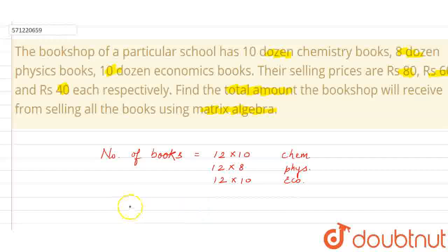Now, what we need to do? We need to express these things in matrix. Let us express number of books as matrix A. And let us write it as 12 into 10 will be 120. Then 12 into 8 will be 96, and 12 into 10 is again 120. So this is our first matrix.